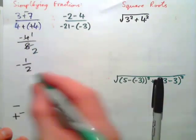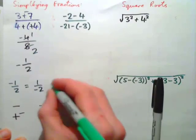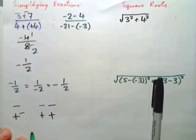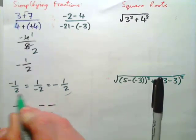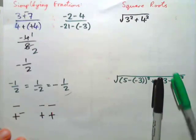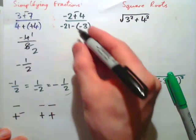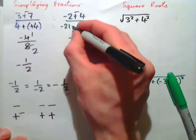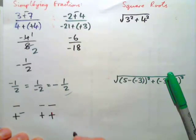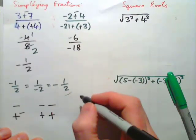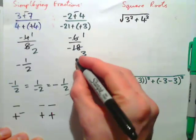Remember that negative 1 over 2 is the same as 1 over negative 2, and the same as negative 1 over 2 — these are all equivalent negative fractions. Now go ahead and calculate: negative 2 minus 4 over that expression. Subtraction changes to plus negative: negative 2 plus negative 4 is negative 6. Negative negative changes to plus plus: negative 21 plus positive 3 gives negative 18. Negative over negative makes positive, and 6 into 6 goes once, 6 into 18 goes 3 times — that's positive 1 third.